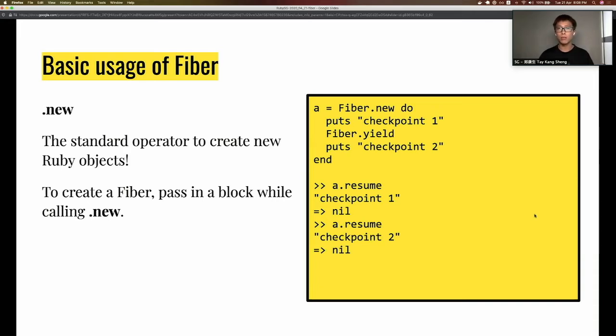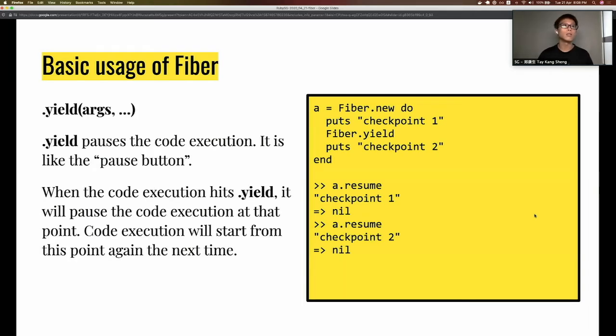To create a Fiber, we have to pass a block while calling new. In this case, the block consists of two puts and one yield. It's a very simple example just to showcase what it's about.